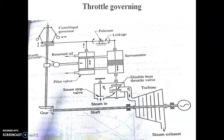Throttle governing is the most widely used method, particularly for small turbines, because of its low initial cost. However, it should be noted that this method reduces the efficiency of the power plant at part load because part of the available energy is lost in the irreversible throttling process.